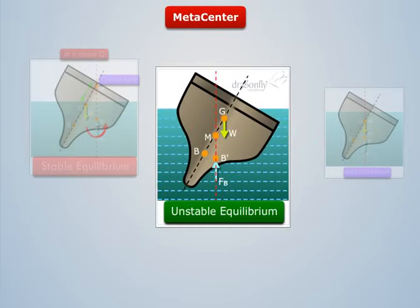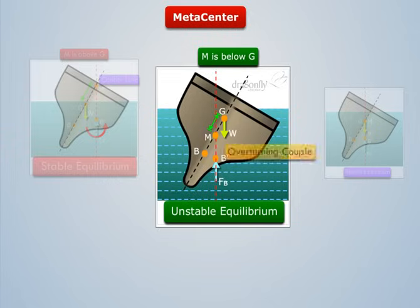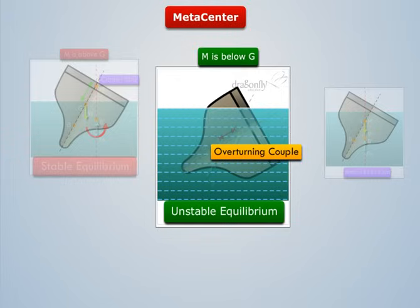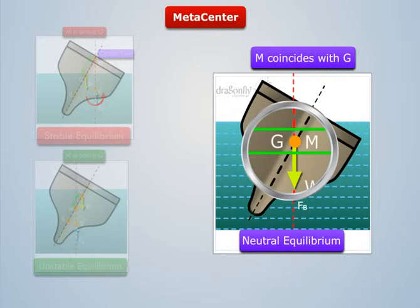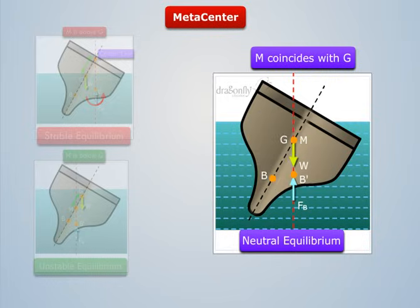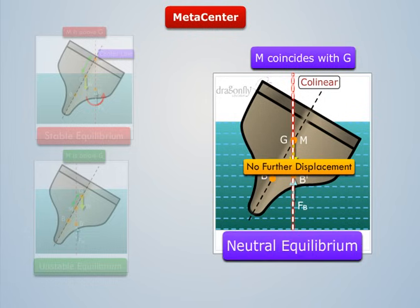When M is below G, an overturning couple is formed by the buoyancy force and the weight of the body, which tends to overturn the body from its original position. Thus, the body is said to be in unstable equilibrium. And when M coincides with G, the line of action of the buoyancy force and the weight of the body are collinear and pass through the same point. Due to this, the body neither returns to its original position nor increases its displacement further. Thus, the body is said to be in neutral equilibrium.